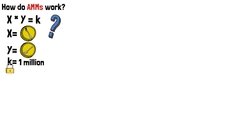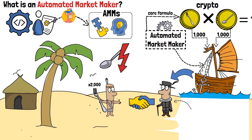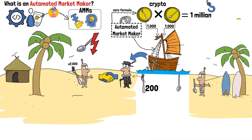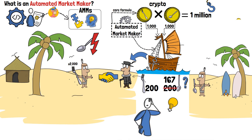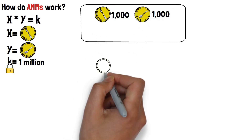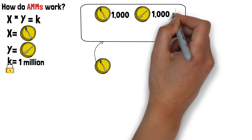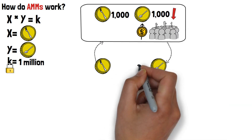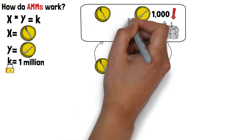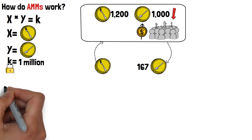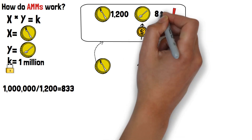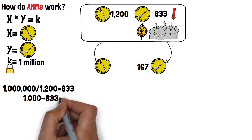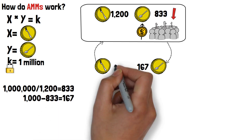Say you've noticed there's already a shortage of spoons on your island. You go to the special ship and give it 200 forks. How many spoons would you receive back? If you said 200, that's actually wrong — the actual answer is 167. The ship has 1000 forks and 1000 spoons. You add 200 forks, totaling 1200 forks on deck. Then take the constant k value of 1 million and divide it by 1200, giving you 833. Subtract 833 from the 1000 available spoons, and you get 167 — the number of spoons you'd receive for your 200 forks. This is because fewer spoons than forks remaining on the ship makes the spoons more valuable, since there's higher demand for them.